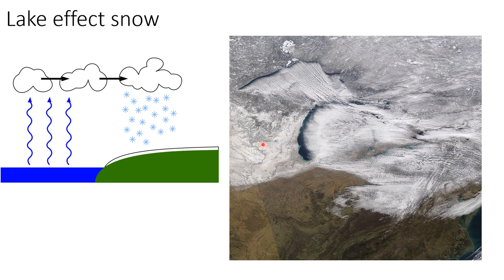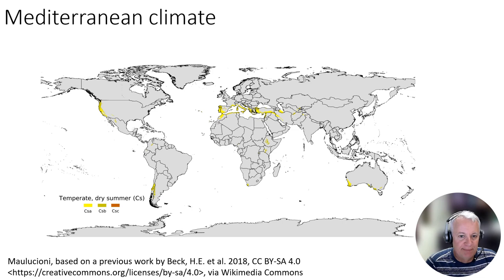This is an example of a big lake effect snow. These are the Great Lakes. Cold continental air from Canada has moved over the Great Lakes, picking up moisture and dumping it on the regions east of the Great Lakes. Buffalo, New York is famous for its lake effect snows, and you can get a lot of snow dumped on these regions because of those lake effects.